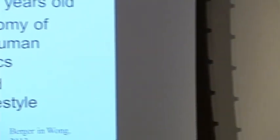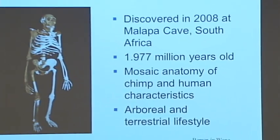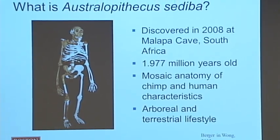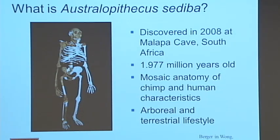So first things first — what is Australopithecus sediba? Sediba is a human ancestor species that was discovered in 2008 in what is now South Africa at a cave site called Malapa. It's dated to be about two million years old, and I actually brought some replicas of the fossils to pass around so you can hold and feel sediba.